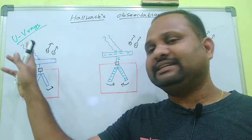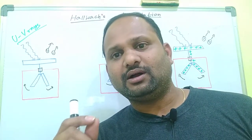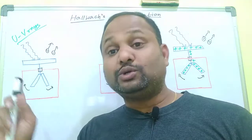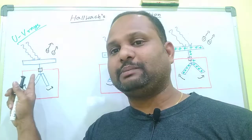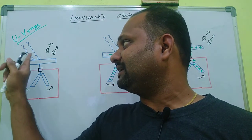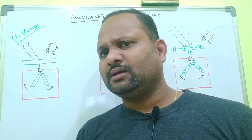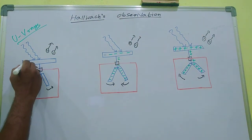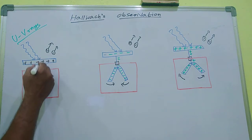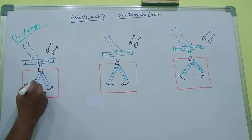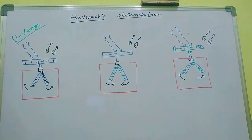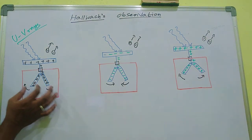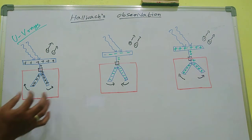When ultraviolet rays are irradiated to the neutral zinc plate — there is no charge here — what happens? When the ultraviolet rays strike the zinc metal plate, it becomes positively charged. This charge flows through the wire and reaches the gold leaf electroscope. Due to the same charges on the two leaves, the electroscope will open because of electrostatic repulsion — positive and positive charges repel each other, so the leaf becomes open.